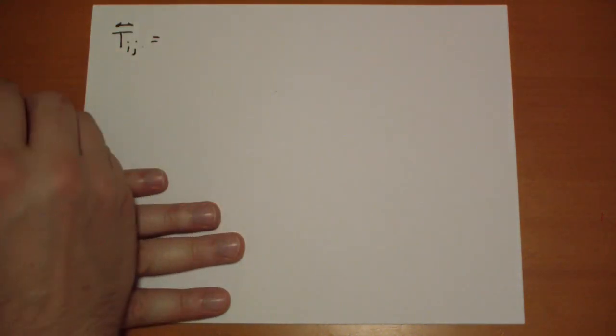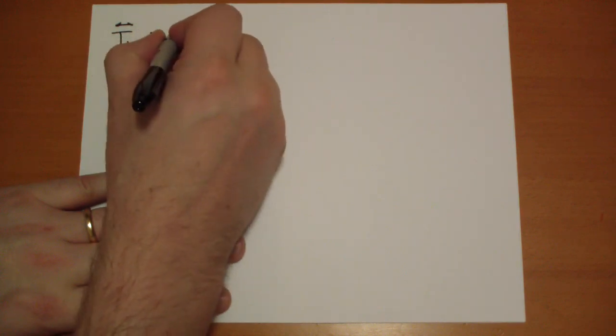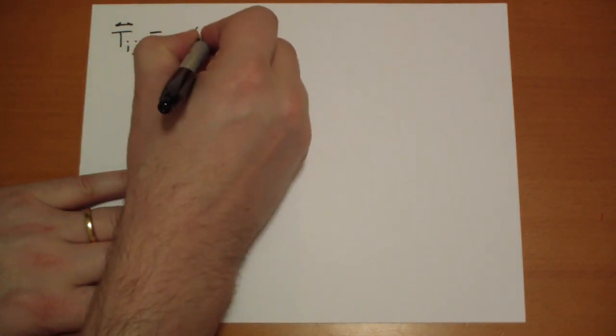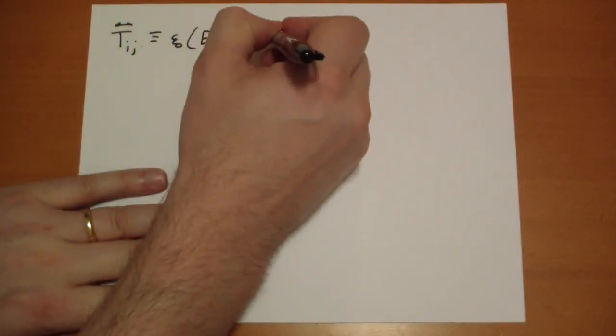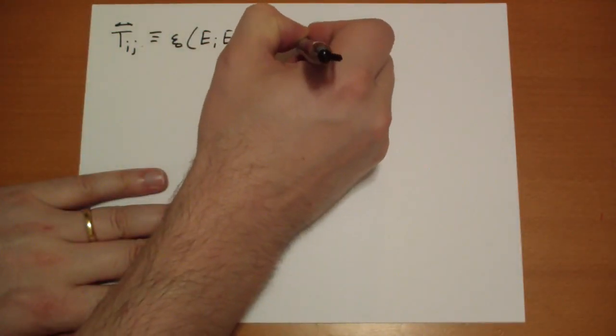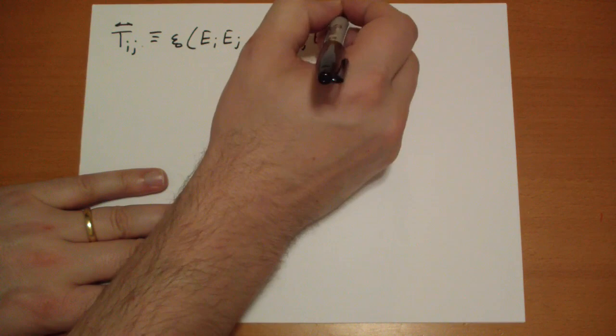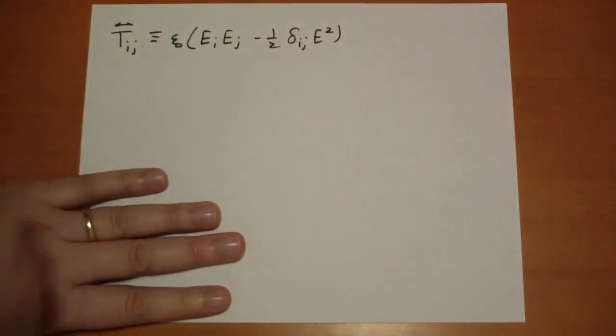So the Maxwell Stress Tensor is defined as epsilon-knot, this is the definition, epsilon-knot of E I E J minus 1 half Kronecker delta I J of E squared.